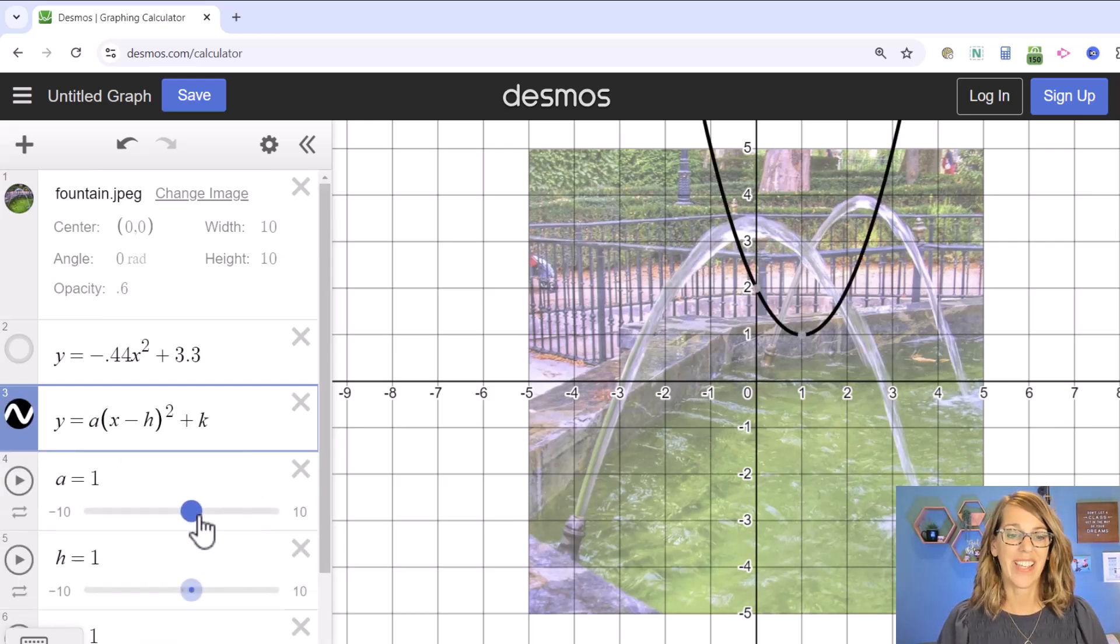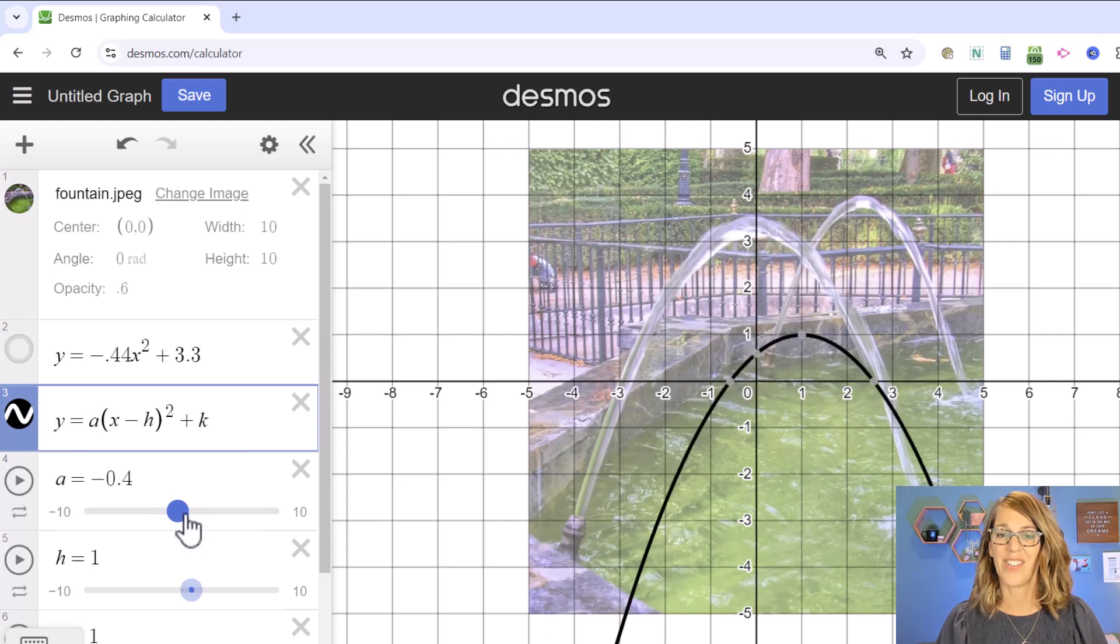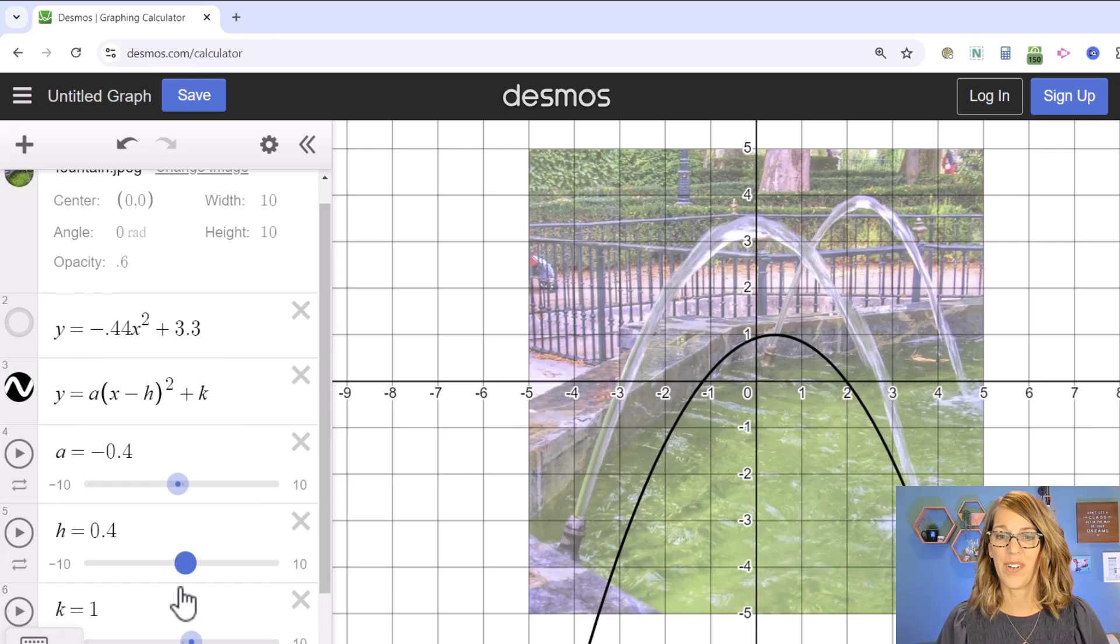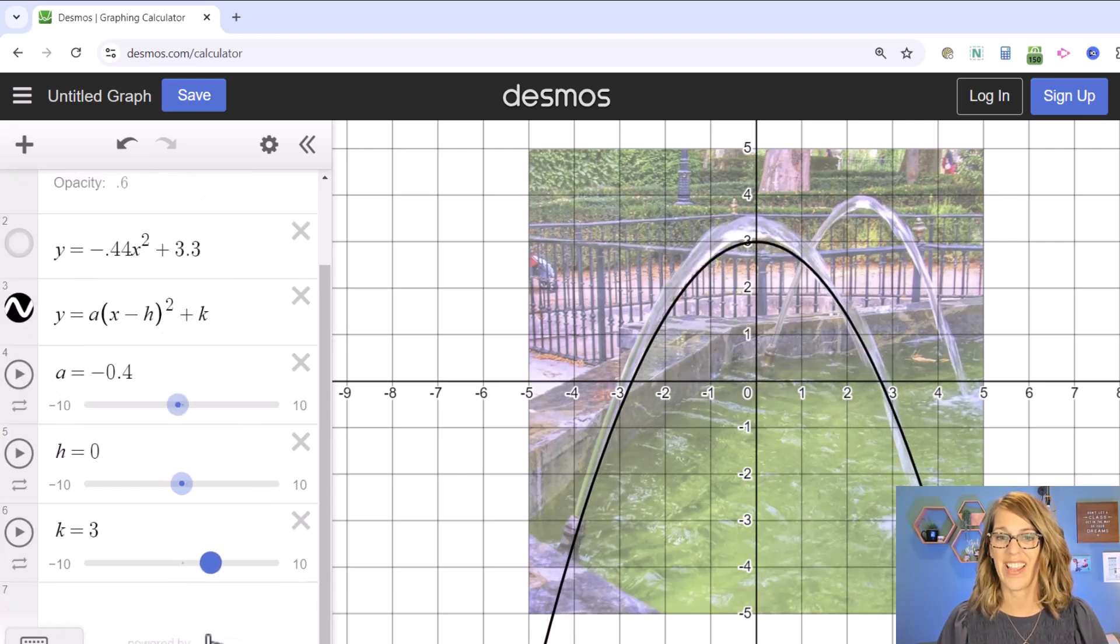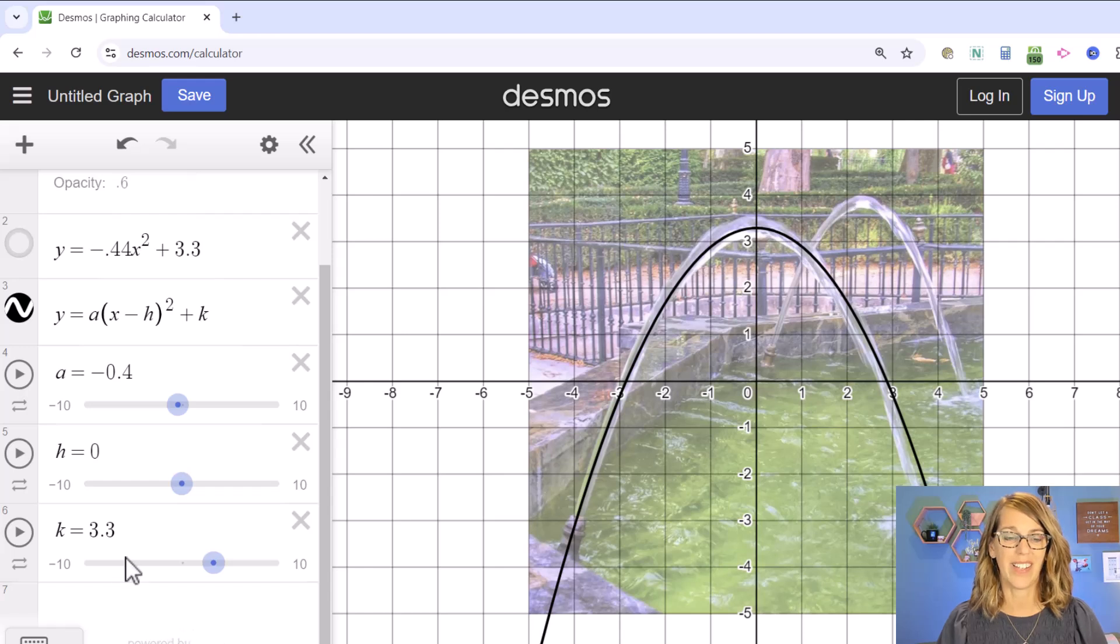And I will say yes, please. And I can start to play with the shape, the vertex by changing the h and the k. And there we are. Look how incredibly close we were.